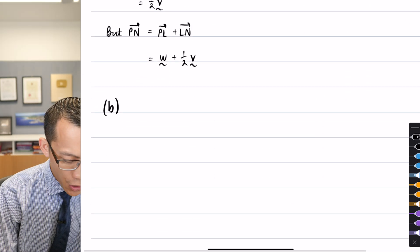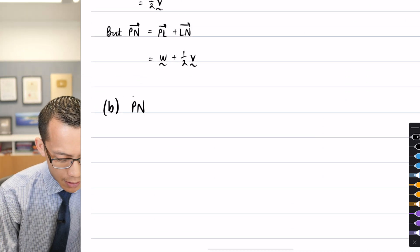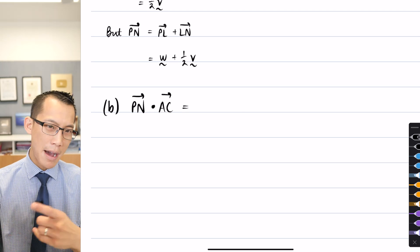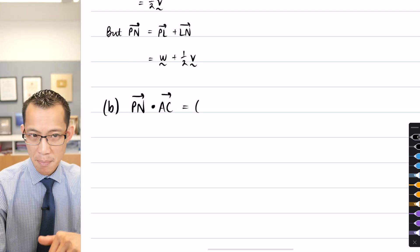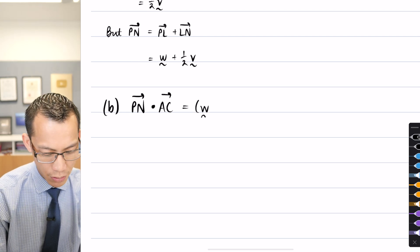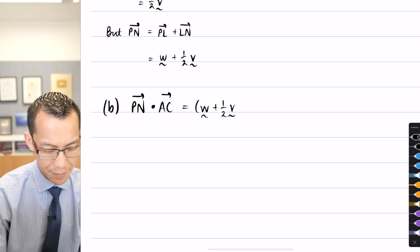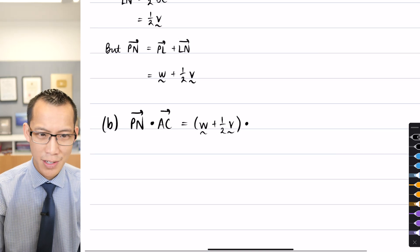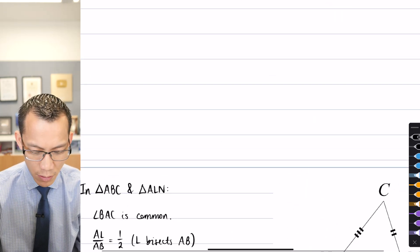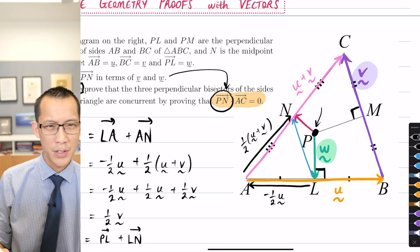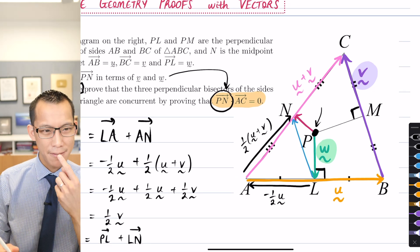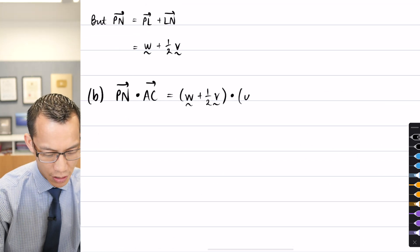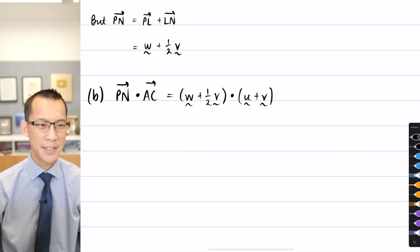So just scrolling down. So PN dot AC. What is that equal to? Well, from my previous part, we worked out that PN was W plus half V. Sound all right? And now what I want to do is say AC. Now just go back again to the diagram. What did we say AC was equal to? We already had it in terms of the vectors that were given to us. What's AC? U plus V. Very good. So I'm just going to go down and put that in. That's U plus V. Fantastic.